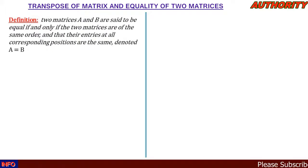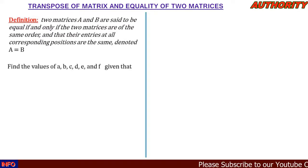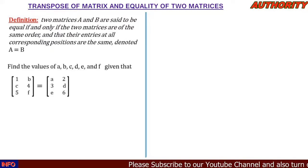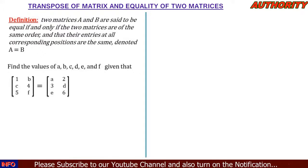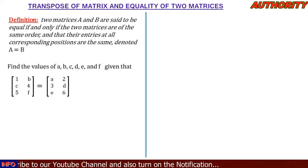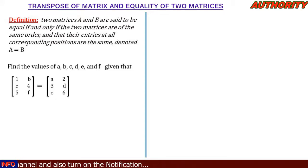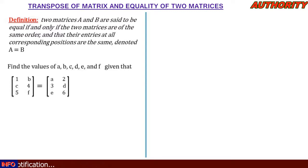Example: Find the values of a, b, c, d, e, and f, given that the matrix [1, b; c, 4; 5, f] is equal to the matrix [a, 2; 3, d; e, 6]. We are asked to find the values of a, b, c, d, e, and f.